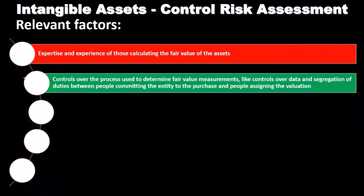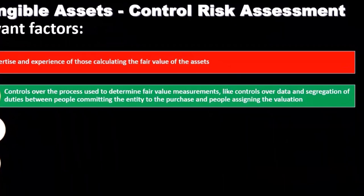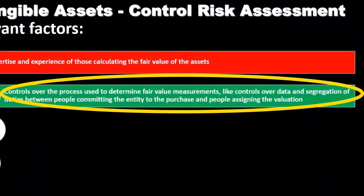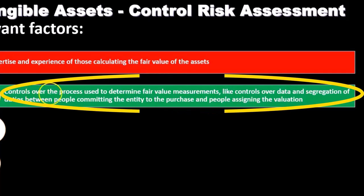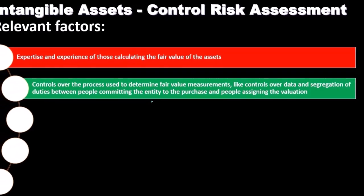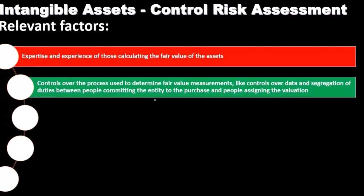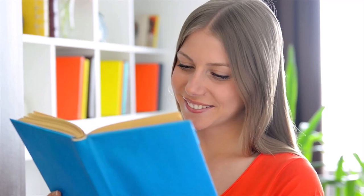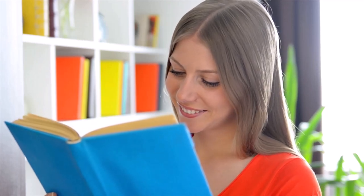Controls over the process used to determine fair value measurement — like controls over data and segregation of duties between people committing the entity to a purchase and people assigning the valuation. We want controls over the people in charge of the purchase of these intangible assets and the people calculating the valuation that will be recorded on the books. We want to have a segregation of duties there as an internal control factor.